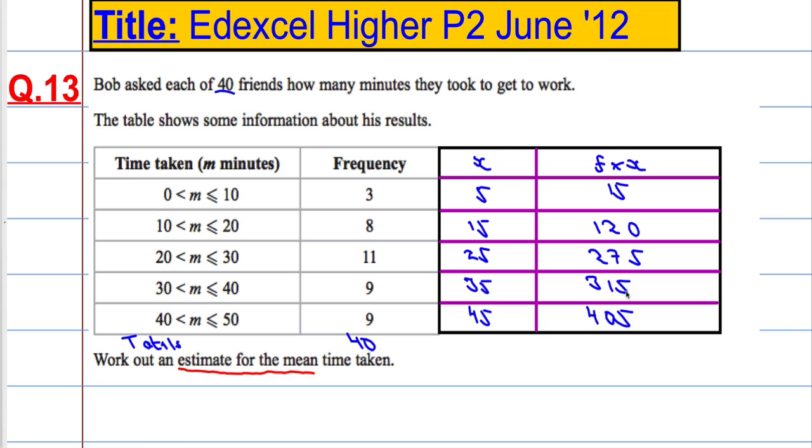So adding these up: 15, 120, 275, 315, 405. The total time was around about 1130.